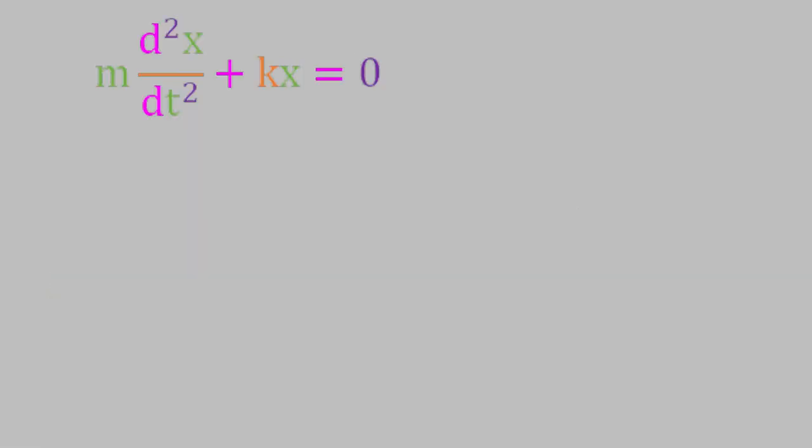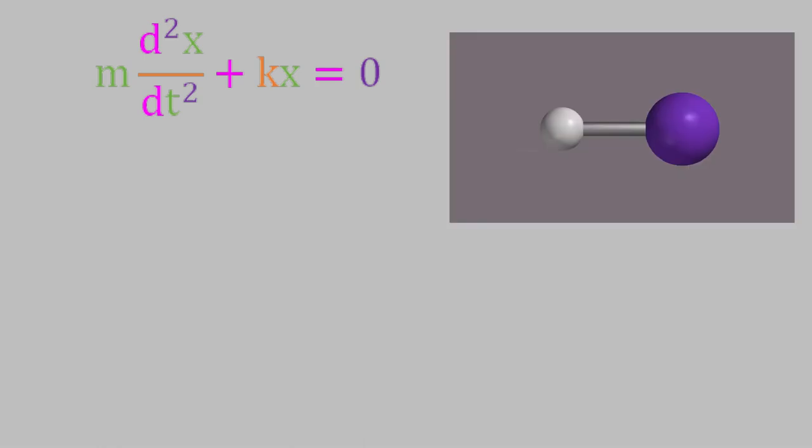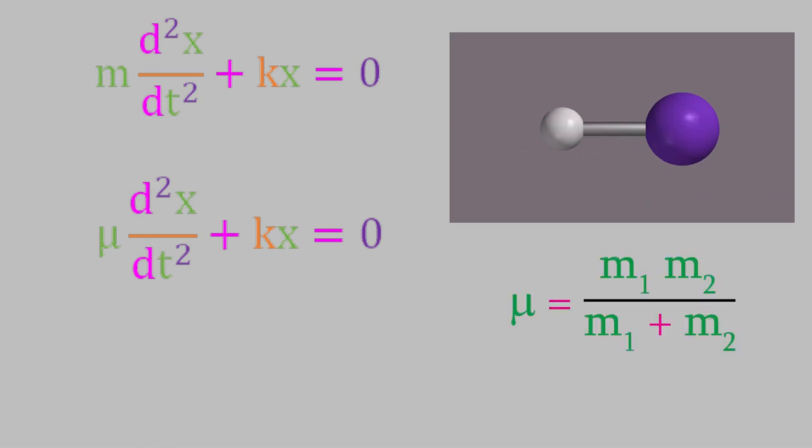Now, if we consider two atoms connected by a vibrating bond instead of a spring, we need to make one small change to this equation. The two atoms on either end of the bond may be two different elements with two different masses, so instead of m, we need to use mu, the reduced mass. If you watched video 11, you already know that the reduced mass is given by this equation.